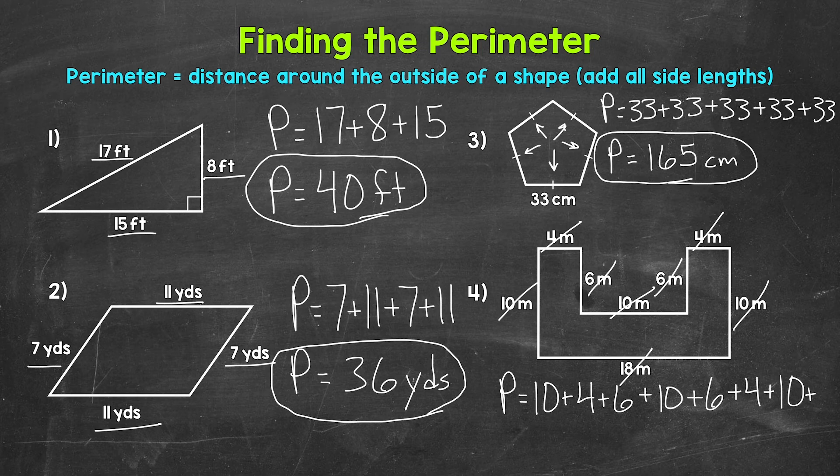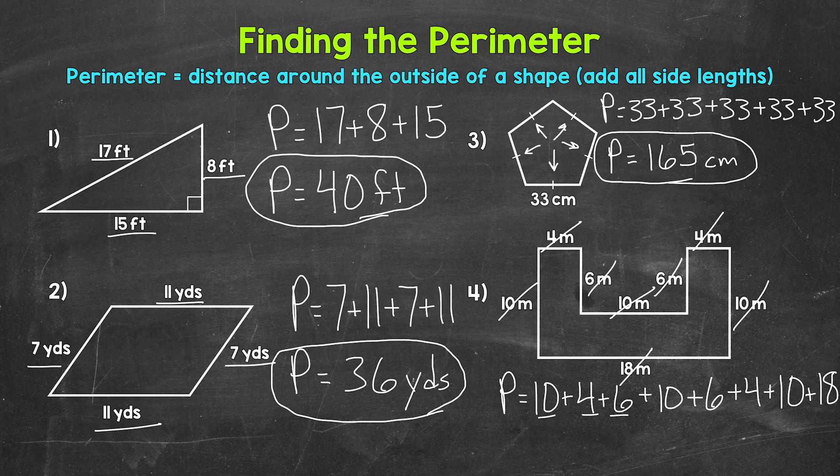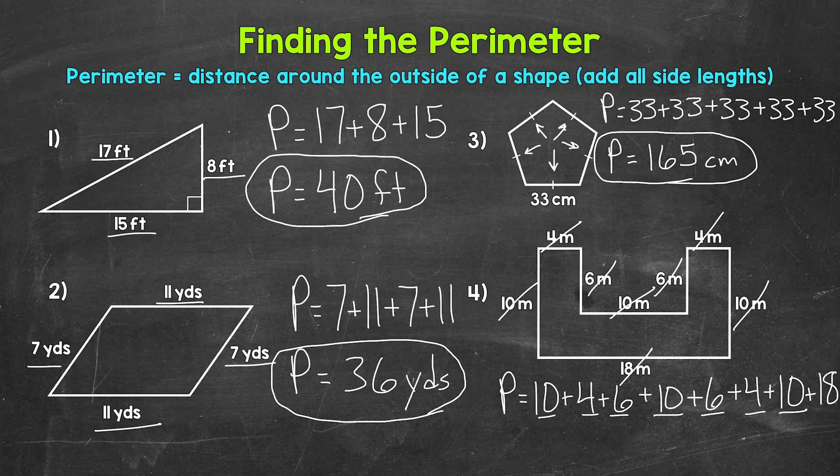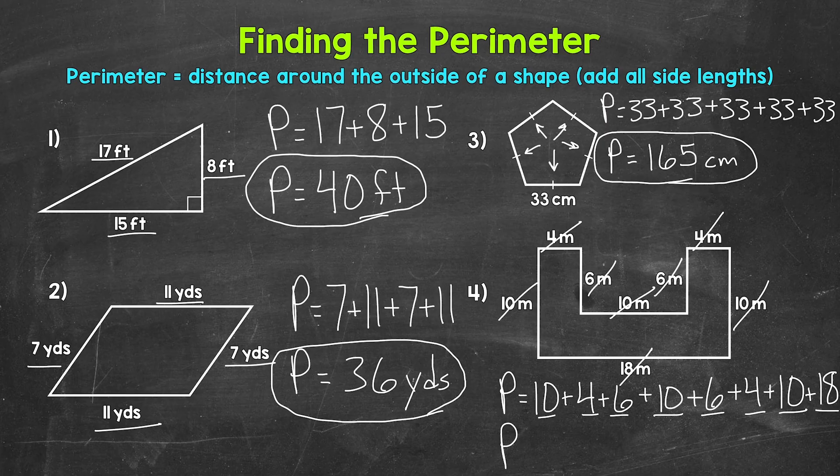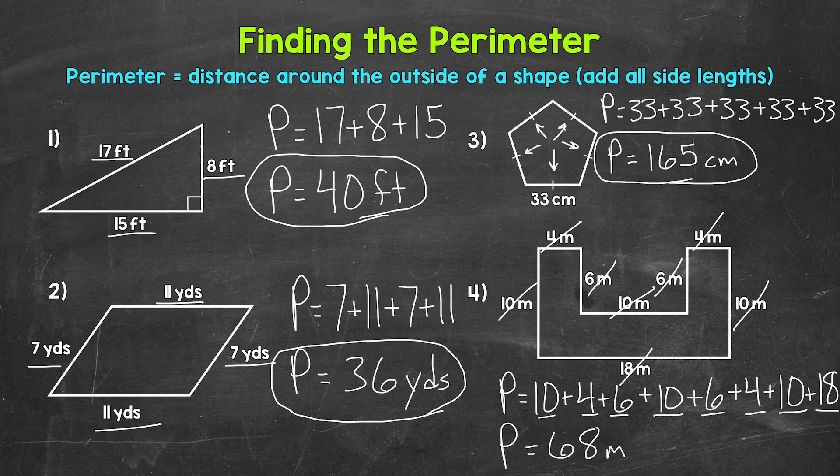Plus 4 is 14, plus 6 is 20, plus 10 is 30, plus 6 is 36, plus 4 is 40, plus 10 is 50, plus 18 gives us a perimeter of 68 meters.